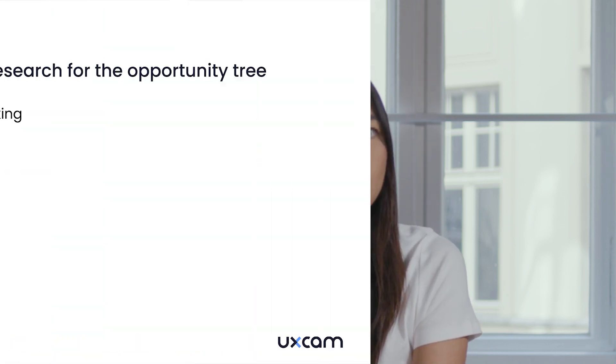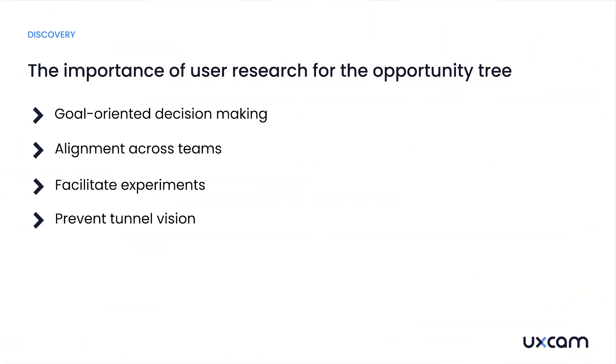When it comes to shaping your opportunity tree, think of user research as the lifeblood that nourishes it. The tree is a crucial tool that helps you map out desired outcomes, identify gaps or opportunities, brainstorm potential solutions, and design experiments to validate them. However, the quality of the tree — how robust, targeted, and effective it is — largely depends on the depth and accuracy of the user research you conduct. In this module, we're diving into a detailed look at user research, specifically tailored for mobile apps.